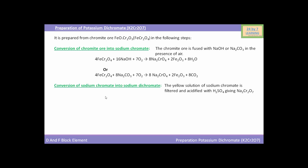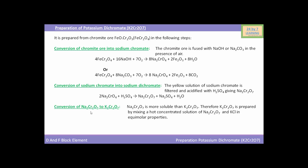The second step in the preparation of potassium dichromate is conversion of sodium chromate into sodium dichromate. The yellow solution of sodium chromate is filtered and acidified with H₂SO₄, giving Na₂Cr₂O₇, i.e. sodium dichromate. The reaction yields sodium dichromate and as a by-product you will get Na₂SO₄, i.e. sodium sulfate, and water.